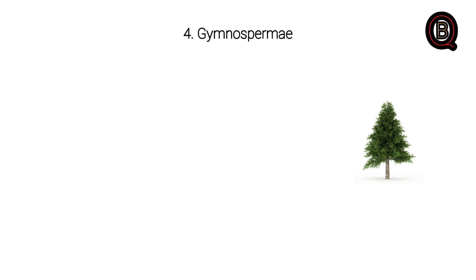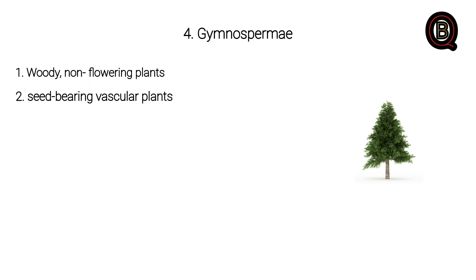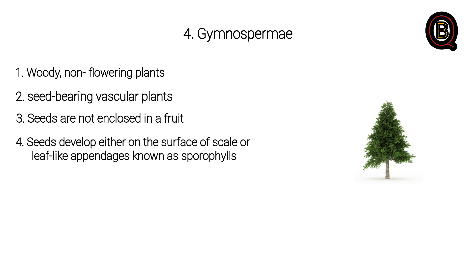Gymnosperms: woody, non-flowering plants. Seed-bearing vascular plants. Seeds are not enclosed in a fruit. Seeds develop either on the surface of scales or leaf-like appendages known as sporophylls. Examples include coniferous trees and pines.